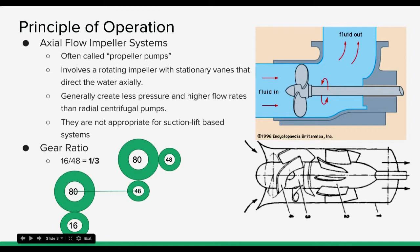These systems involve rotating impellers with stationary vanes that direct the water axially. And as you can see, these are the stationary vanes. And these just direct the water. They don't turn or do anything else except for provide a passage for the water to go through. These generally create less pressure and higher flow rates than the radial centrifugal pumps, which was something that we were looking for and a big factor in why we chose this system.